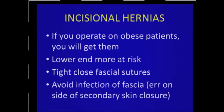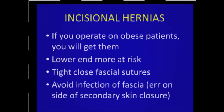Incisional hernias: if you operate on big folks, you're going to get them. If you make a midline incision, the bottom of the incision is about three-quarters more likely to get a hernia than the top, just because of gravity and pressure. Make sure you close your fascial sutures well and use lots of sutures per inch. Avoid infection on the fascia, and err on the side of secondary skin closures — if you do perforated bowel in an obese patient, you almost never are justified closing the skin. Close by secondary intention or delayed closure to avoid wound infections.